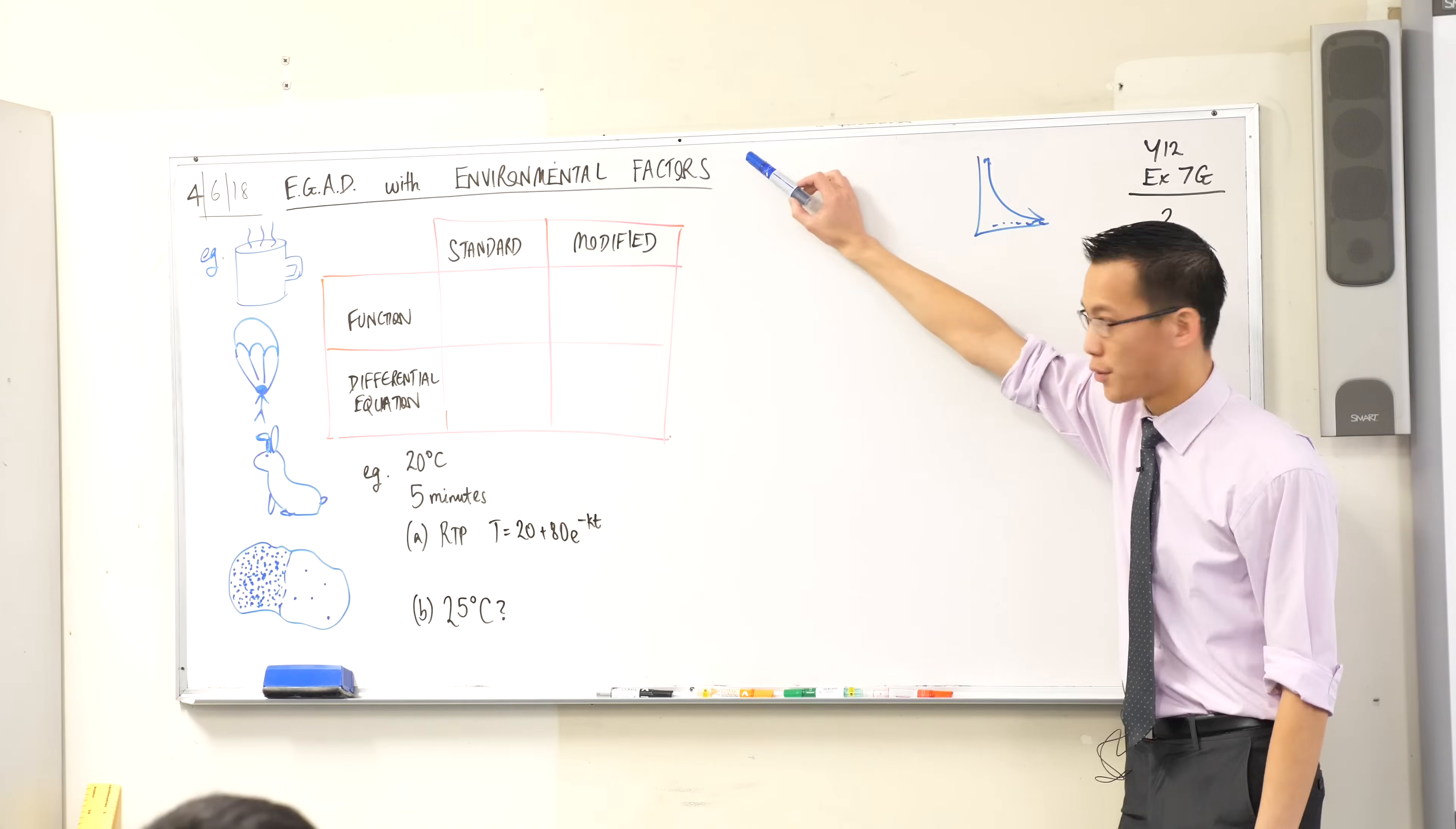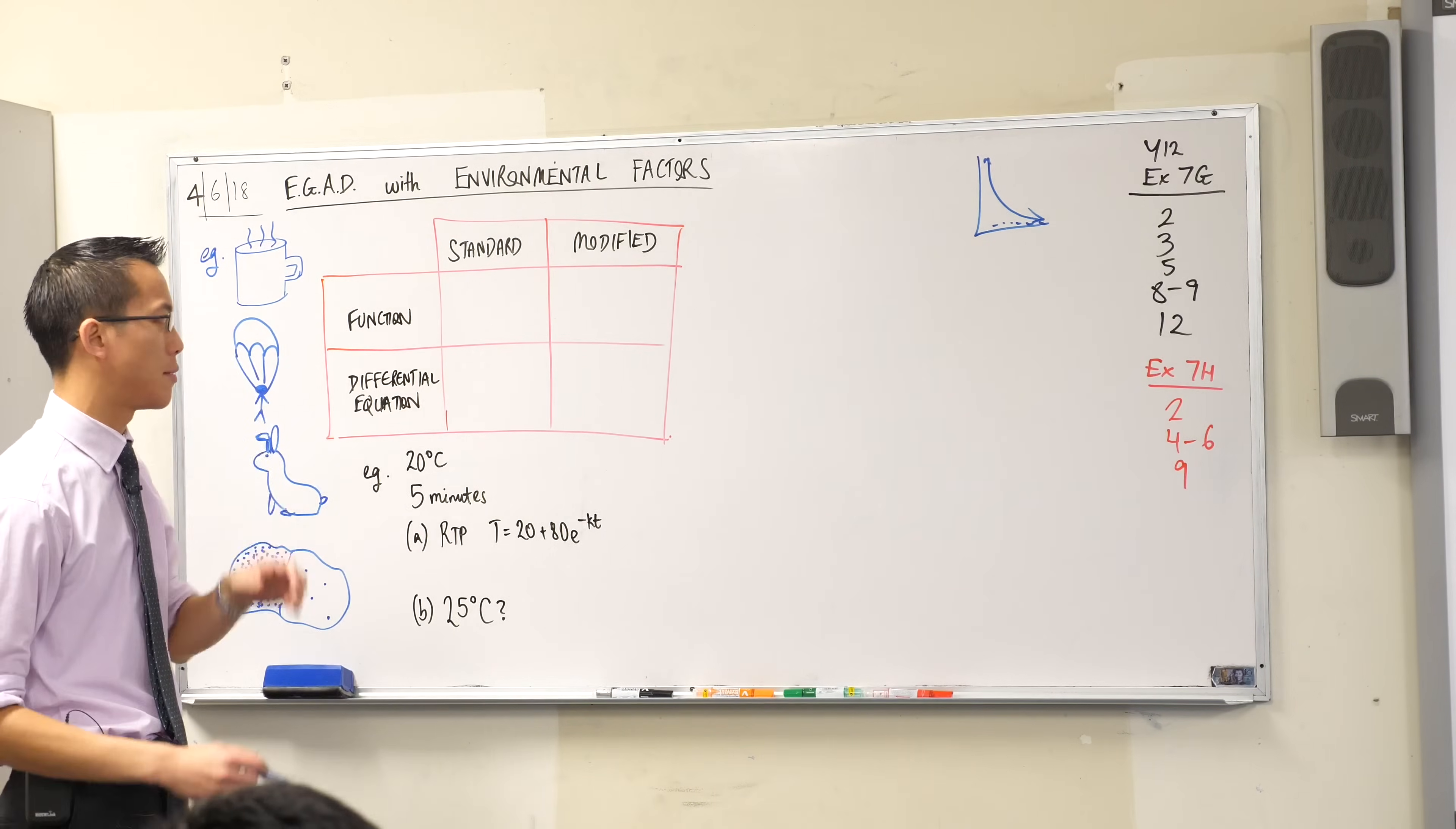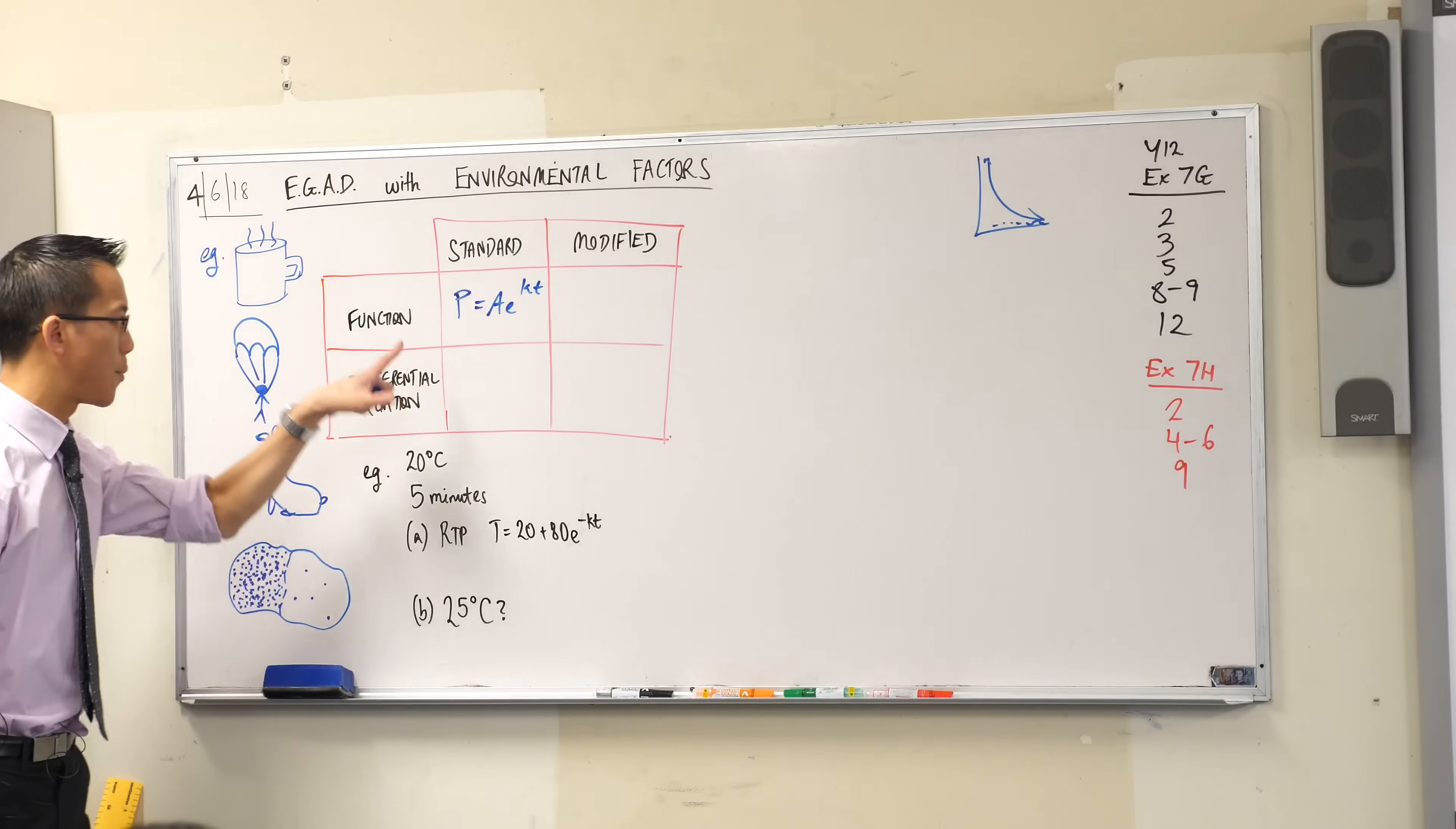These environmental factors mean that our equations of exponential growth are ever so slightly different. You do need this table now. Let's think about normal growth and decay. We have situations like this, you've got your population and it's P = ae^(kt). We know that if it were decay, what would be the difference?